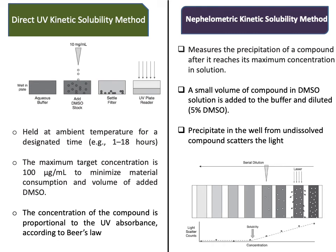The next method is UV determination. The same DMSO solution is added to the aqueous phase; until the precipitate forms, an equilibration time of 1 to 18 hours is given depending on the compound. Once the precipitate has formed and settled, the supernatant is removed and analyzed by UV spectroscopy, and the concentration is determined.